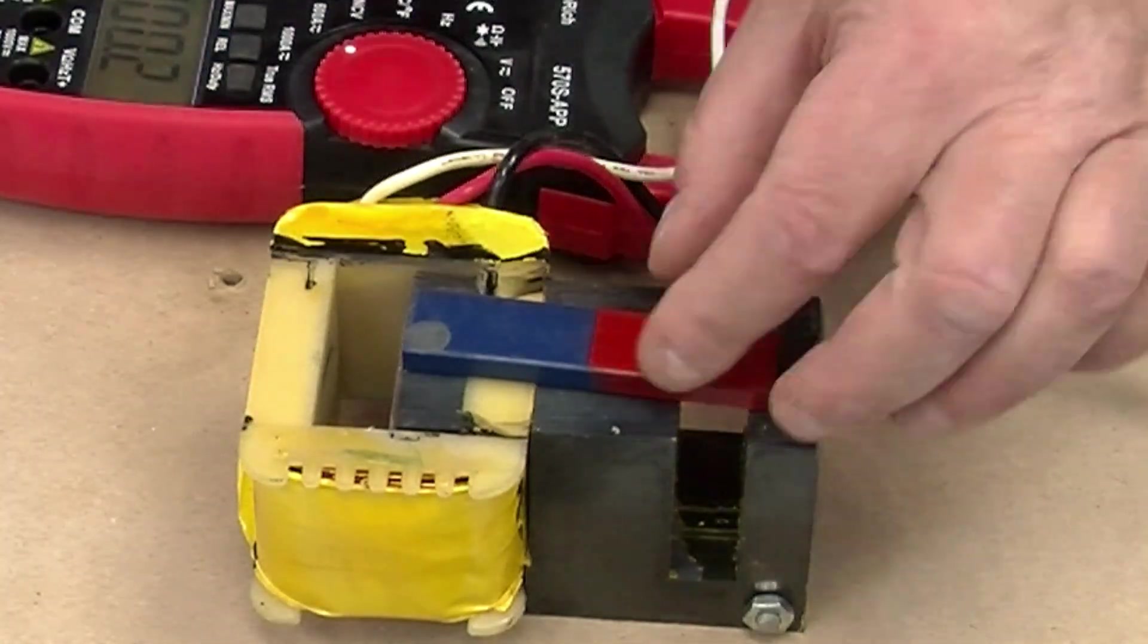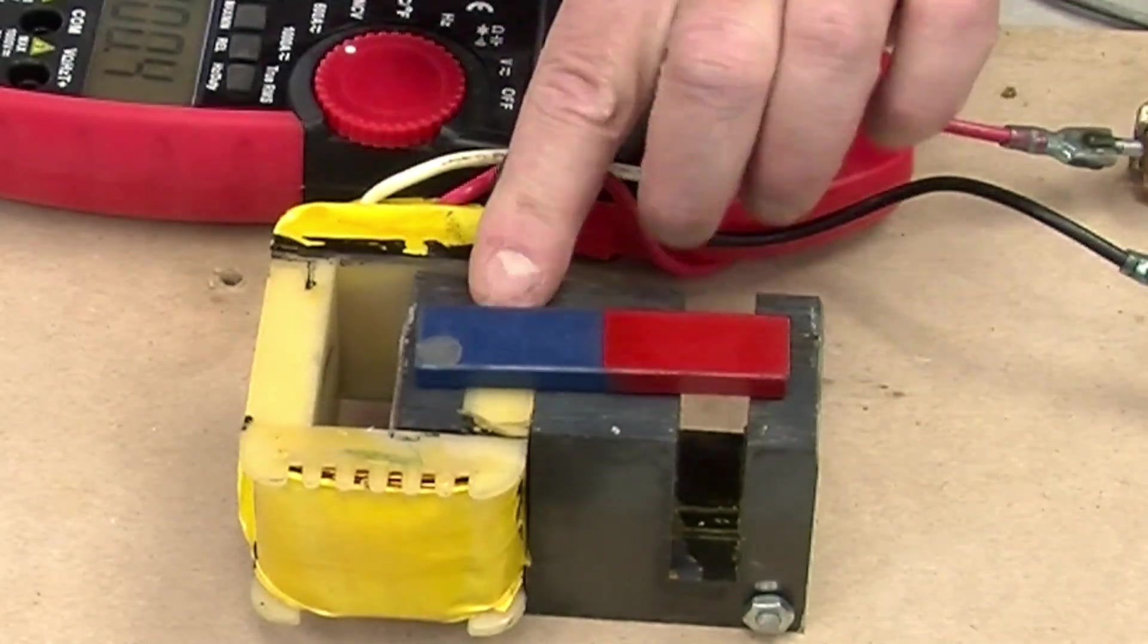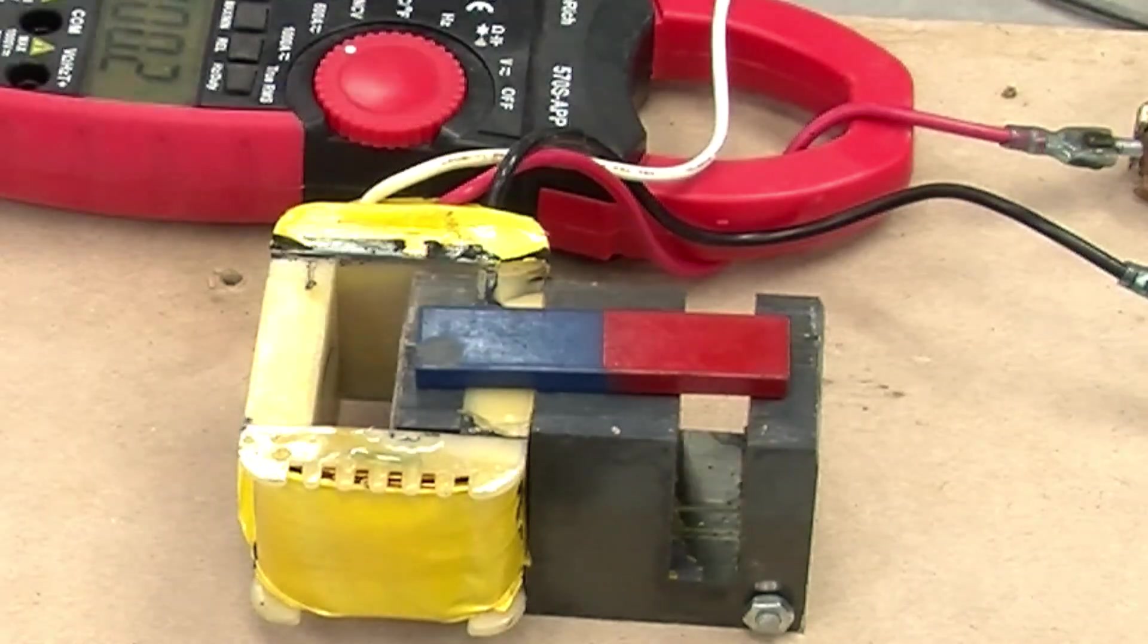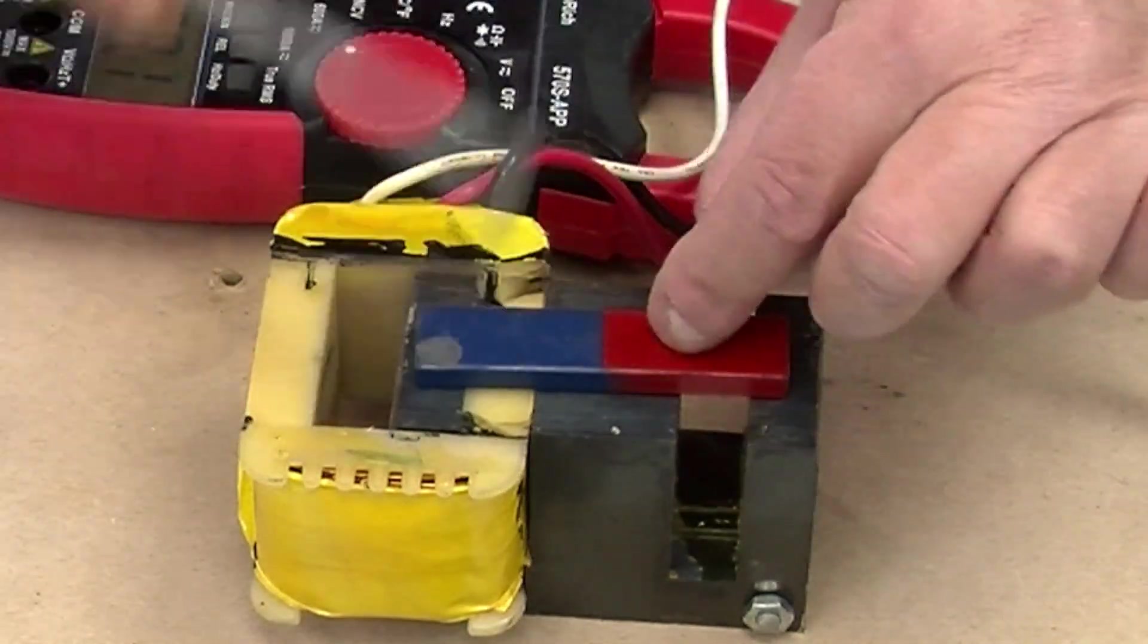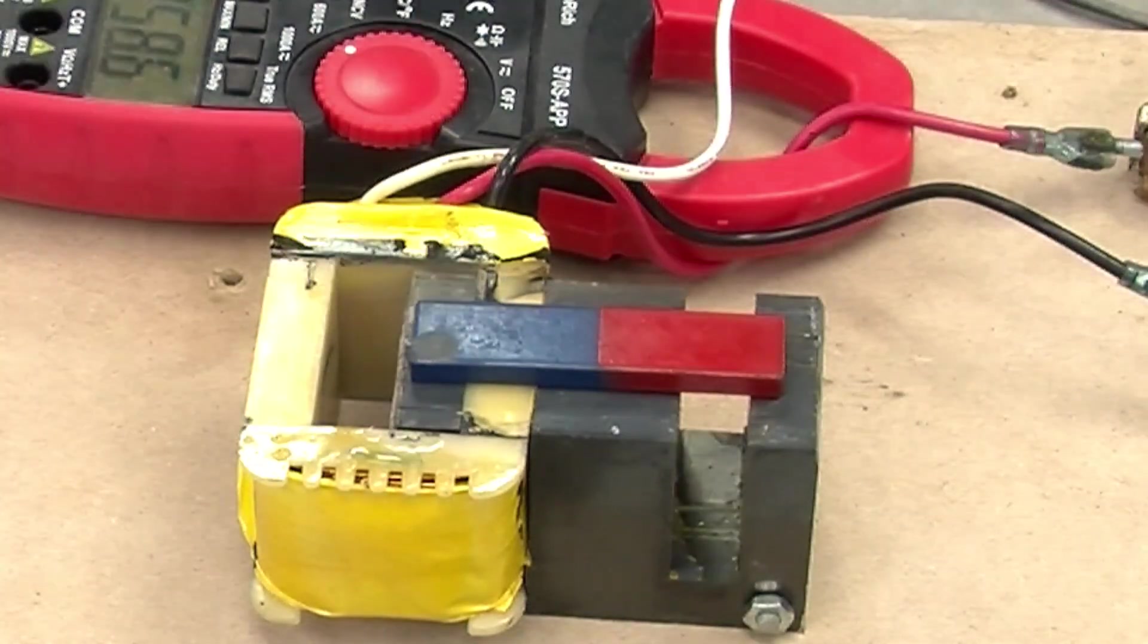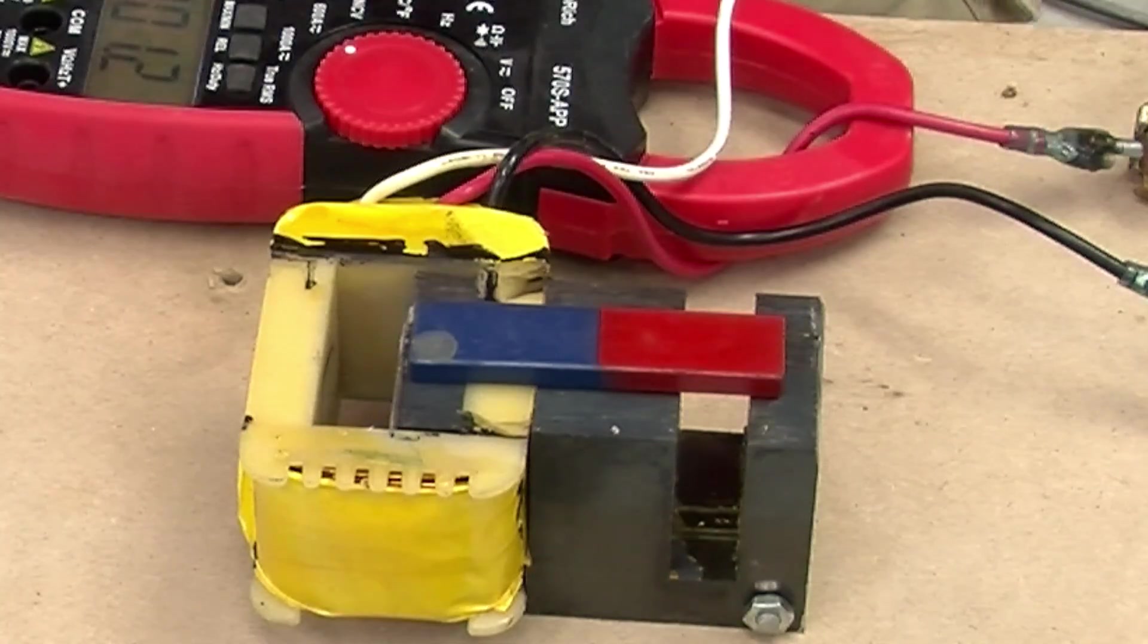That was even more than I expected. That was more like 100 amps. In fact, it started melting a bunch of things. Let's try that again. That's like 100 amps, and I'm going to tap it a few times. And the tapping is just to help those magnetic domains move.